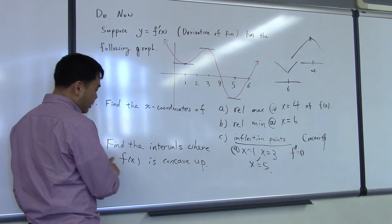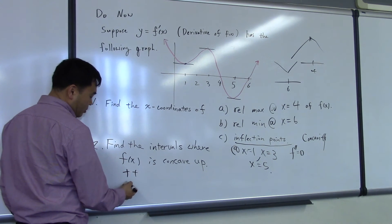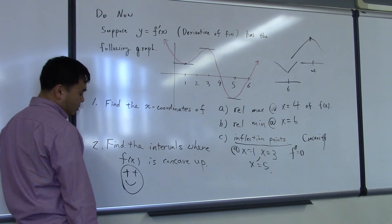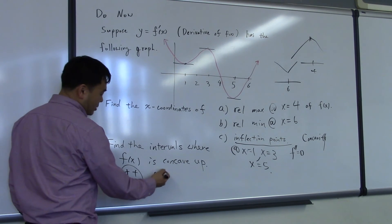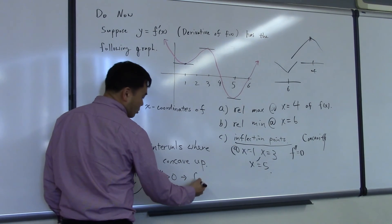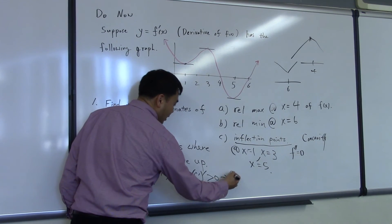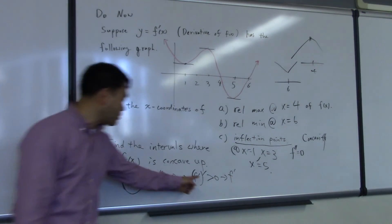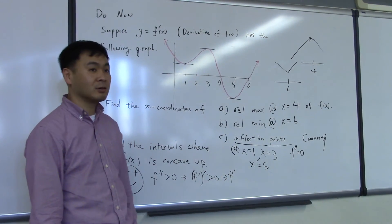Now, find the interval where f of x is concave up. For concave up, we think about the smiley face. This is concave up, which means the second derivative has to be positive. That's what we need, f double prime has to be positive. That means the derivative of f prime has to be positive, which means f prime should be what? If the derivative is positive, the function is increasing.